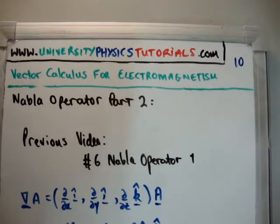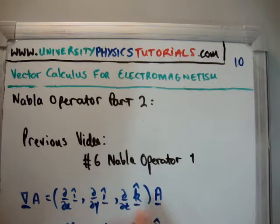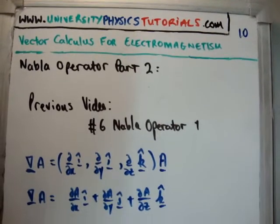So we saw that the Nabla operator acting on a function A can be defined in the following way. This is it acting on a function, or it can be written in the following way and we call this the gradient.